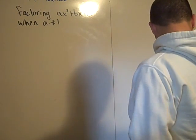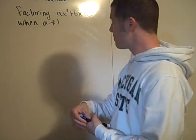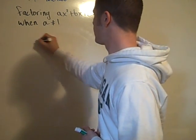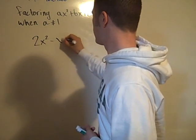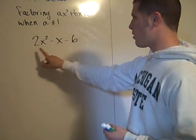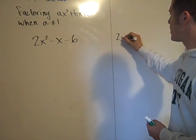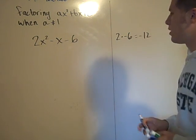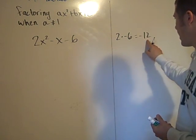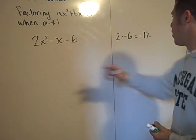So the example would be 2x² - x - 6. We start by multiplying the a value times the c value. So 2 times negative 6 equals negative 12.